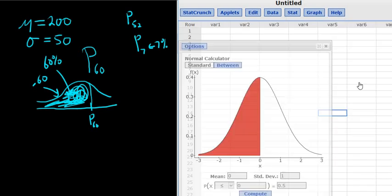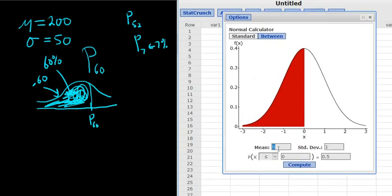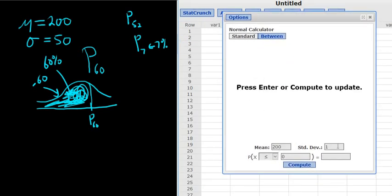Then you left-click and just enter the mean and standard deviation. In this case, the mean was 200 and standard deviation was 50. And we want the p60. So they're giving us the area, so the area goes in the second box.